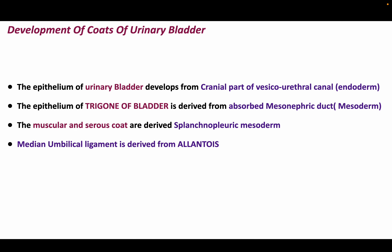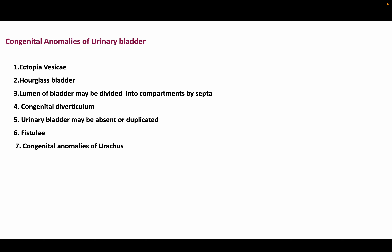The urinary bladder has different coats from different origins. The epithelium of the urinary bladder develops from the cranial part of the vesicourethral canal, which is endodermal. The epithelium of the trigone is derived from the mesonephric duct, which is mesodermal. The muscular and serous coats are derived from the splanchnopleuric mesoderm. The median umbilical ligament is derived from the allantois.